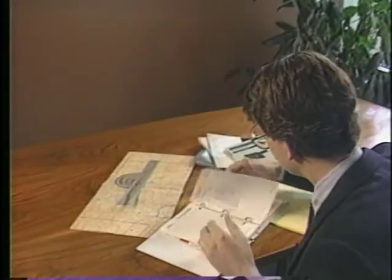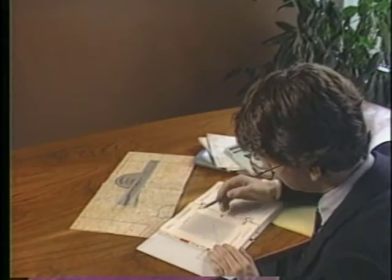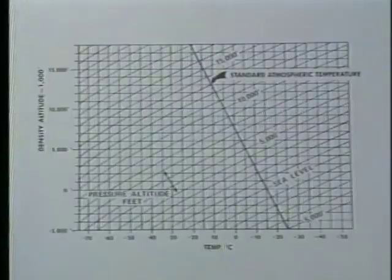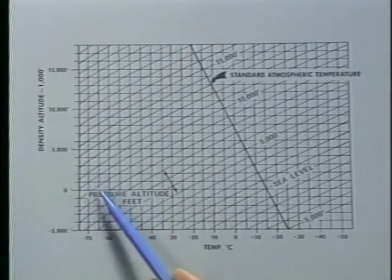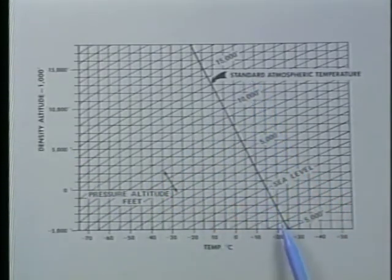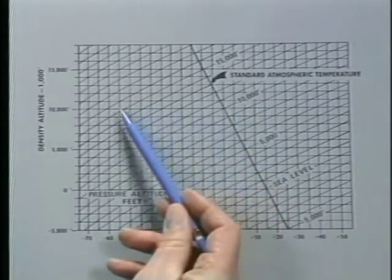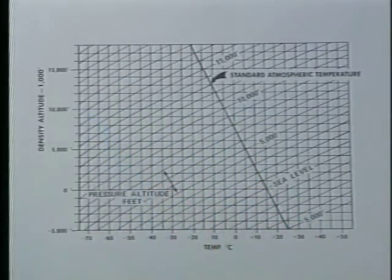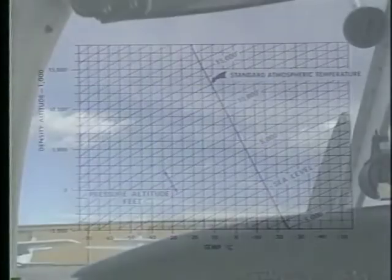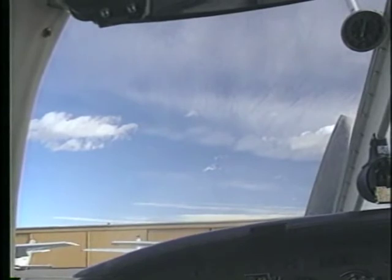One of the most effective ways to determine how your airplane will perform is by computing density altitude. Density altitude is pressure altitude corrected for non-standard temperatures, and they equal one another only when standard conditions exist. Now let's look at an example of how density altitude is calculated and what this value actually means.